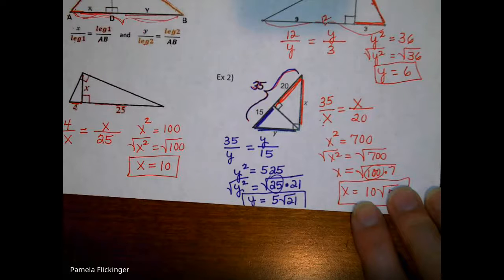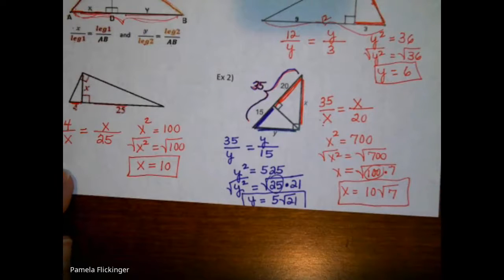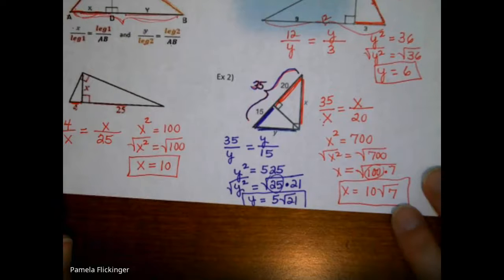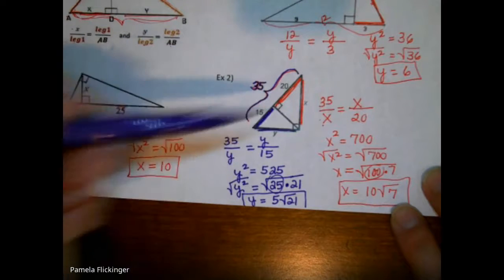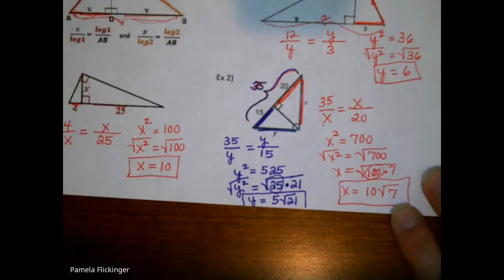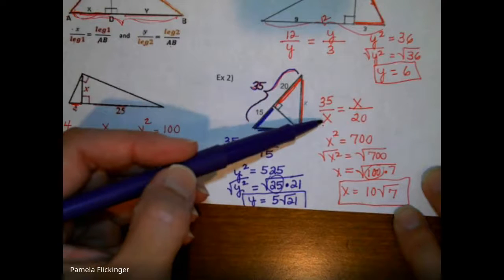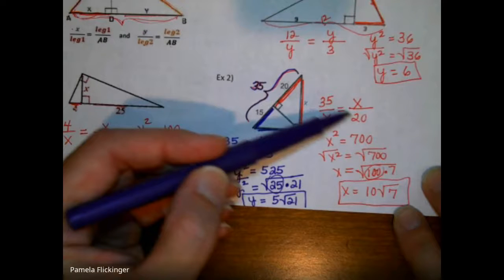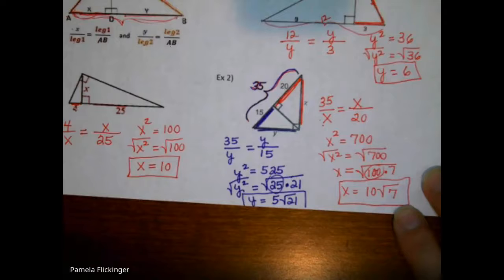You're using these two geometric mean theorems to solve for missing parts. Watch carefully — in these examples the variable was always the geometric mean, but that might not always be the case. There will be examples where they give you the altitude, and that number will be your geometric mean, while one of the other parts will be the missing variable. Just follow the rules and check your work — you should be ready to practice.